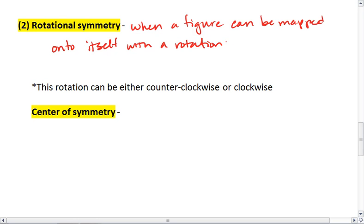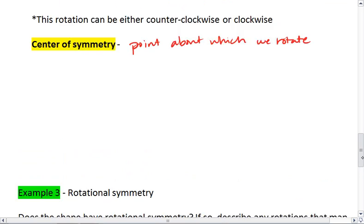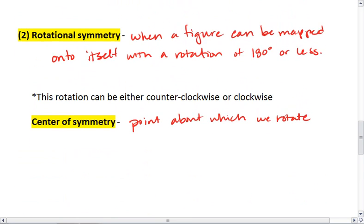And we specifically look for a rotation of 180 degrees or less. This rotation can be either counterclockwise or clockwise. With rotational symmetry, we have a center of symmetry, which is the point about which we rotate. And we'll also have an angle of symmetry.